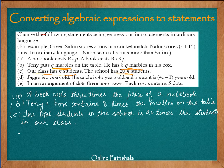Statement D says that Jagu is z years old, his uncle is 4z years old, and his aunt is 4z minus 3 years old. There are two statements here. It is good to break them into two — one describing the age of his uncle and the other describing the age of his aunt.